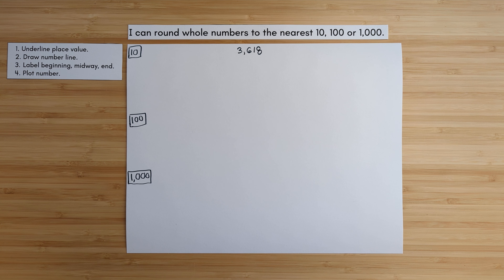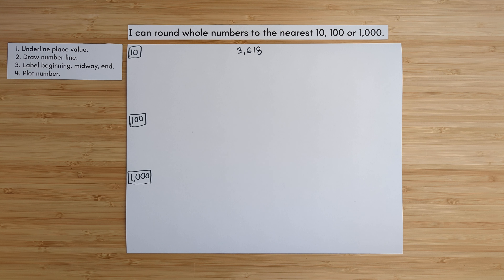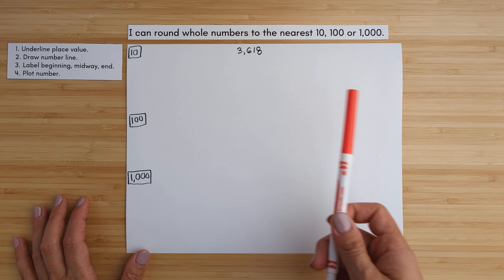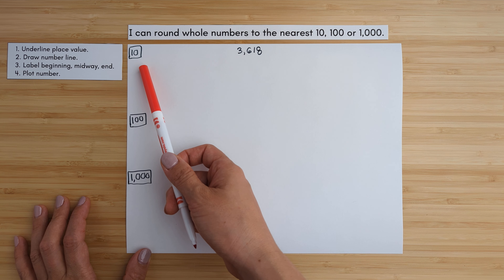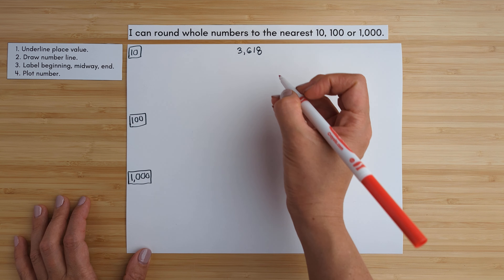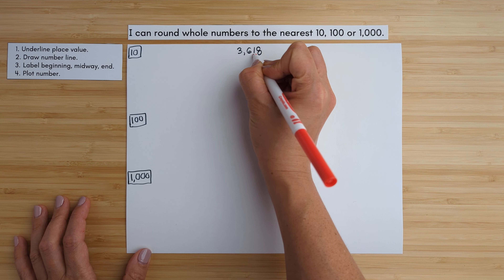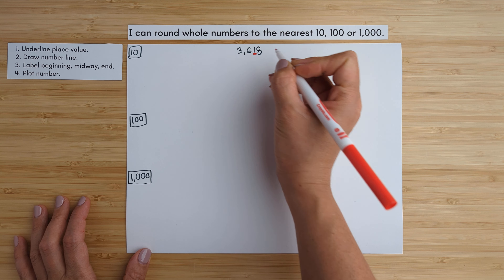The learning icon for today is: I can round whole numbers to the nearest 10, 100, or 1,000. We're going to use the same number for each example. The first thing we're going to do is underline the place value we're looking at. We're looking at the tens first, so we're going to underline the tens place value.